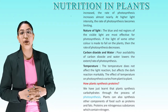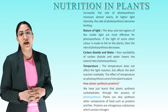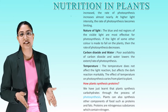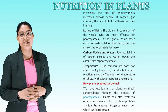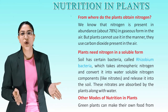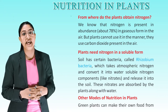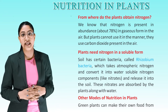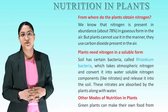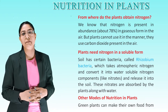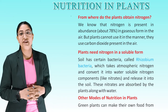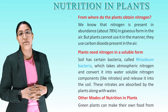How do plants synthesize proteins? We have learned that plants synthesize carbohydrates through photosynthesis. Plants can also synthesize other components of food such as proteins and fats. Proteins are nitrogenous substances which contain nitrogen. From where do plants obtain nitrogen? Nitrogen is present in abundance — about 78% — in gaseous form in the air, but plants cannot use it directly as they use carbon dioxide. Plants need nitrogen in a soluble form. Soil has certain bacteria called rhizobium bacteria, which take atmospheric nitrogen and convert it into water-soluble nitrogen compounds like nitrates, releasing them into the soil. These nitrates are then absorbed by the plants along with water.